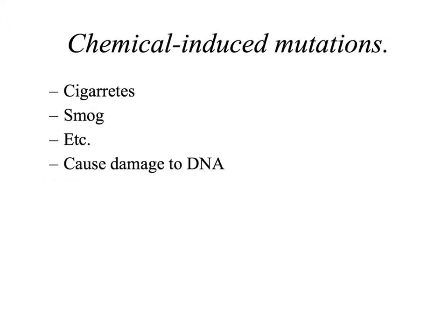The third cause of mutations is chemicals in the environment around us, which can often cause damage to our DNA. This includes chemicals in cigarettes and smog, pesticides, or other dangerous substances in the environment. These chemicals interact with the DNA and cause damage to its molecular structure.